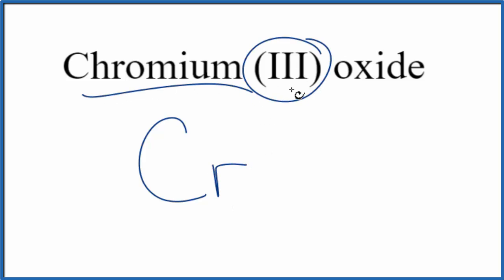This three here, this is a transition metal, and the three tells us the charge here on the chromium. So it's a three plus, so that's kind of helpful.